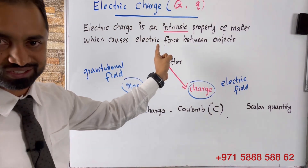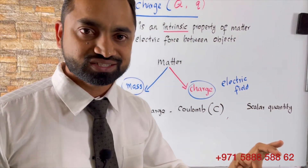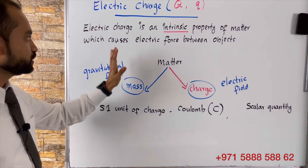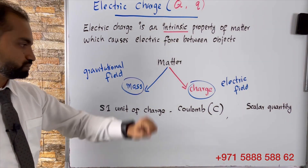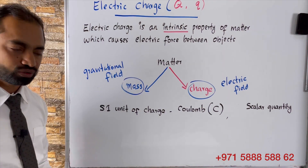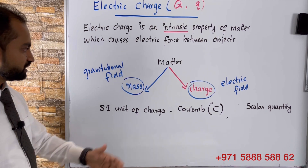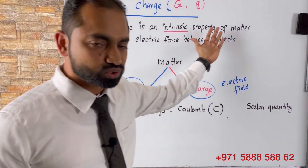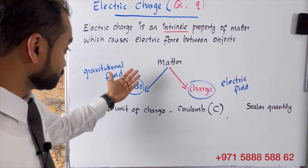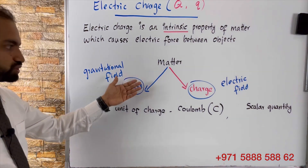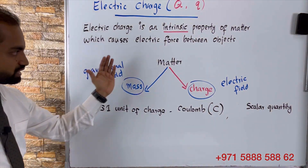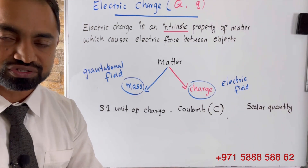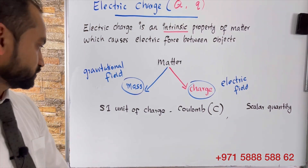So, what is electric charge? Electric charge is an intrinsic property of matter which causes electric force between objects, and electric charge is related to the electric field. Mass is related to the gravitational field — mass and charge are the two intrinsic properties of matter.